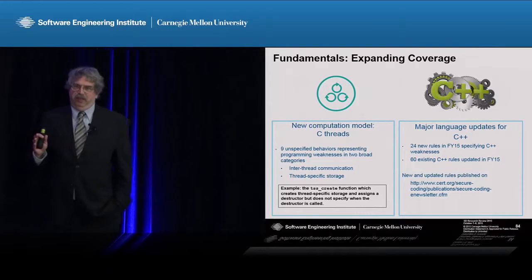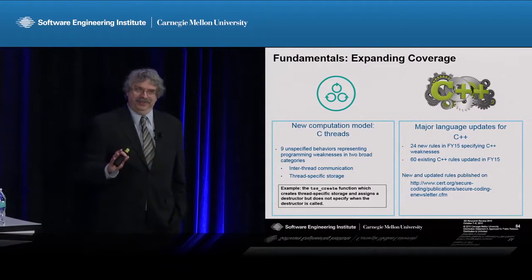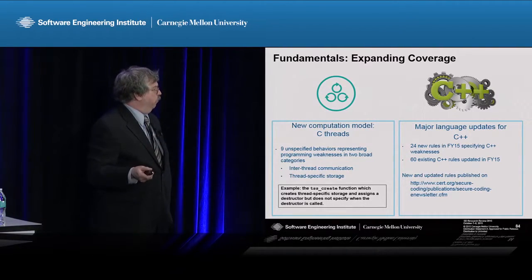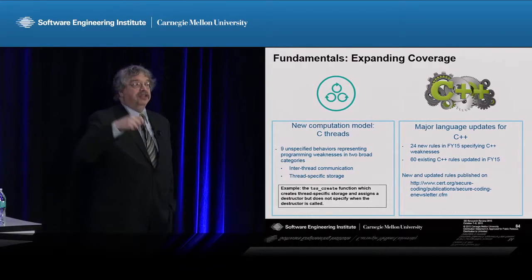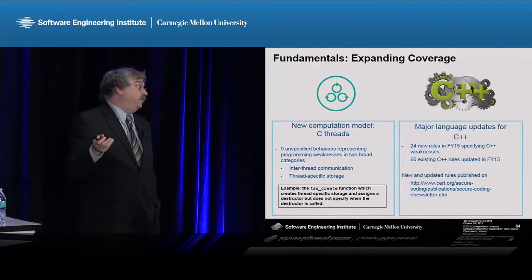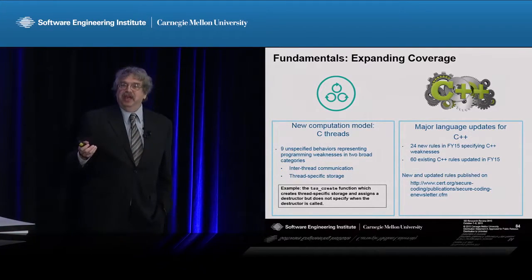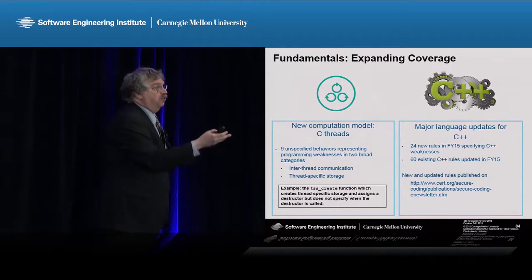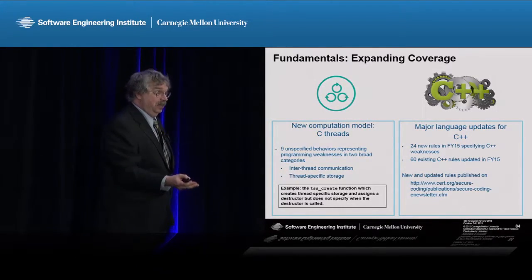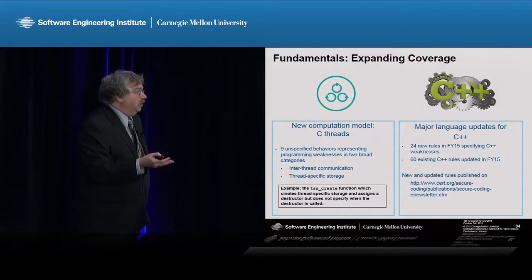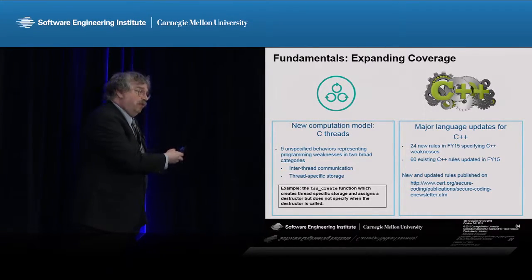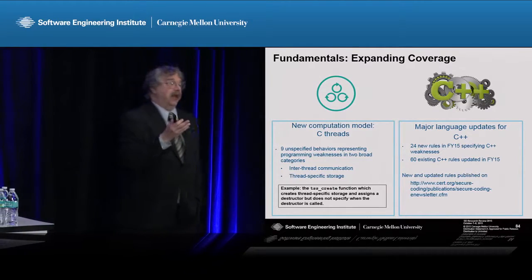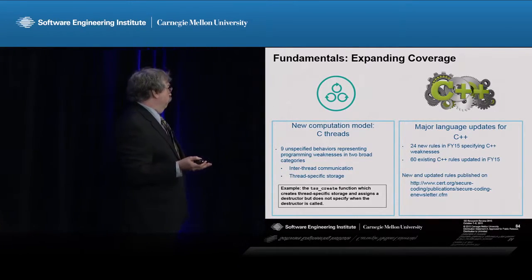To give you an example: when you're running a thread on one of the cores, you allocate some memory, use it, and then it disappears. What happens to that memory? The standard doesn't say. Just like Heartbleed gets access to space you're not supposed to use that may have interesting material in it, if that space isn't reclaimed and cleaned up, it's now available to some other place, and you can start reading information that other process ought not to be reading. That's an example of a weakness that can lead to a vulnerability in C threads.